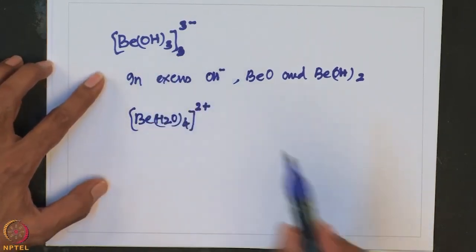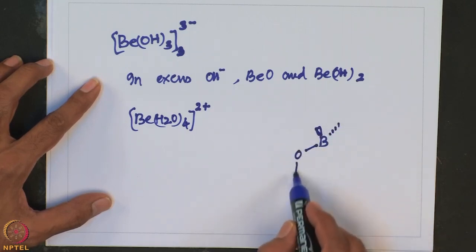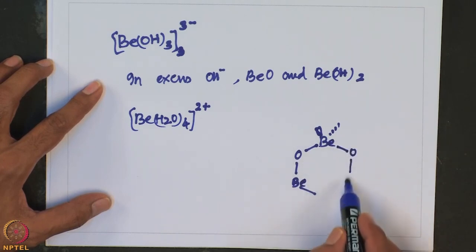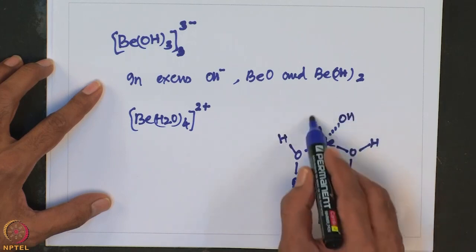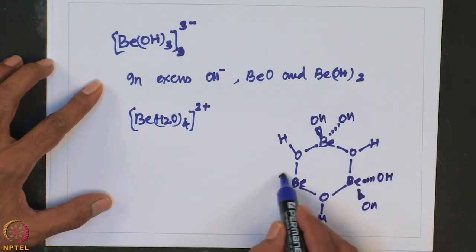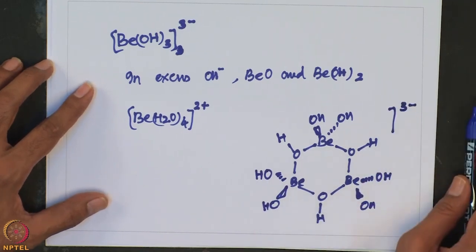The beryllate anion has a cyclic structure — specifically a six-membered cyclic structure with alternating beryllium and oxygen atoms. This is the structure of the cyclic beryllium hydroxide anion. In the next lecture, I will be discussing more about reactions of hydroxides and then the chemistry of alkaline earth metals with respect to their interaction with halogens and other species. Thank you very much.